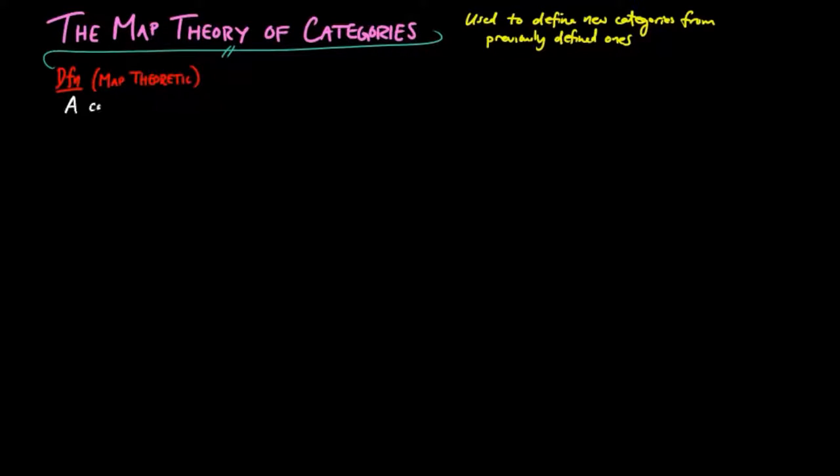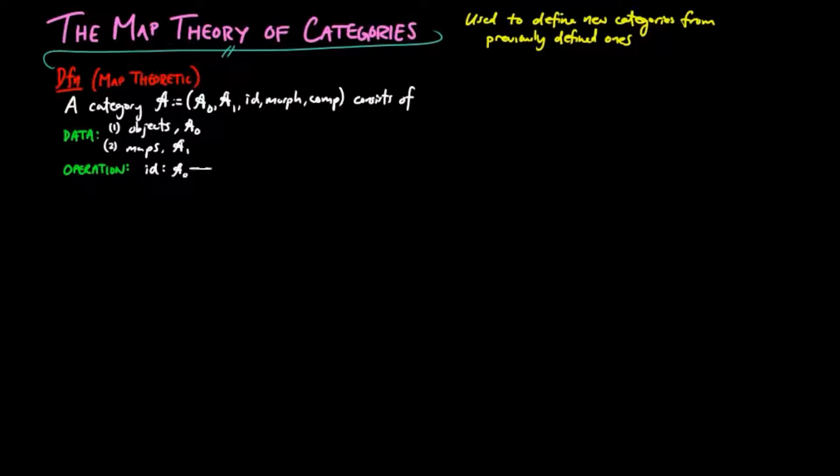In this definition, a category A consists of objects A0 and maps A1 as data, an operation called identity from objects to maps, and relation 1 called morphism on objects, maps, and objects. We denote this relation by an arrow f from object A to object B for morph AFB.